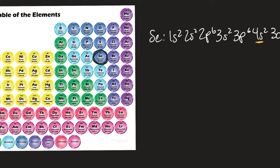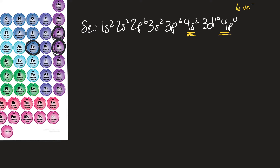Selenium has two choices — two noble gases it could look like. It could look like argon, the noble gas before it, or krypton, the noble gas after it. To look like argon, it would need to lose 6 valence electrons, giving a plus-six charge. Or it could gain 2 electrons to have the noble gas configuration of krypton, giving a negative-two charge.